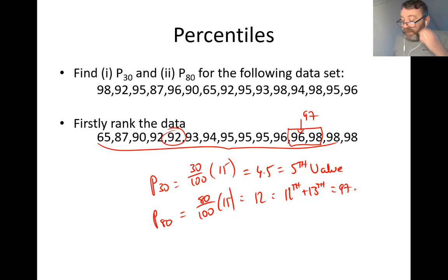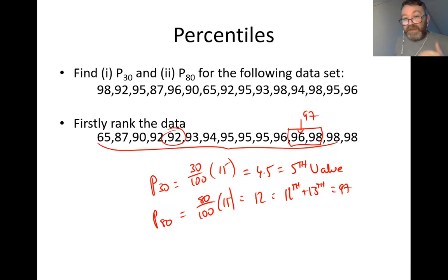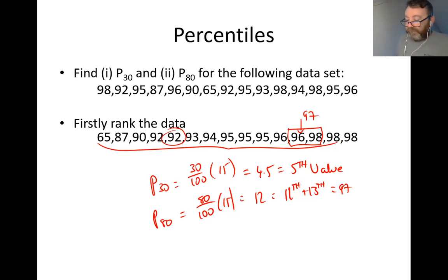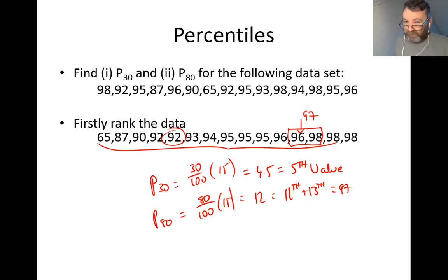Here's what the results mean. Anybody who scored above 97 in this test is in the upper 20% of the class — what we call above the 80th percentile. And anybody who scores above the 5th ranked value is above the 30th percentile, meaning they're in the top 70% — or we say they are above the 30th percentile mark. Anybody who scores below that would be lower than the 30th percentile.